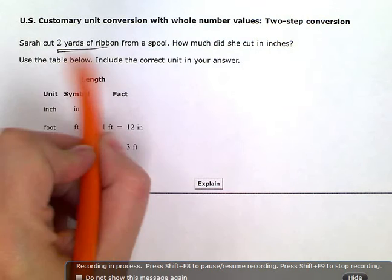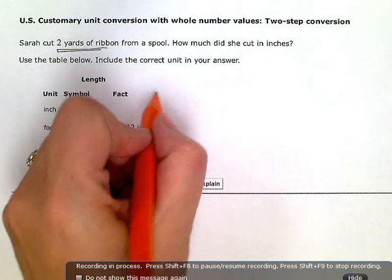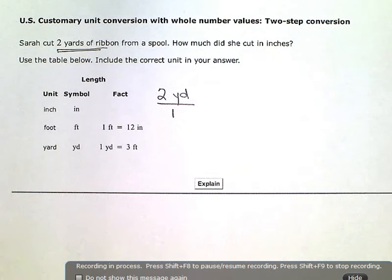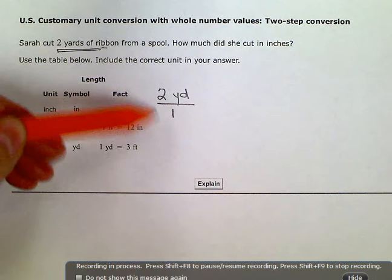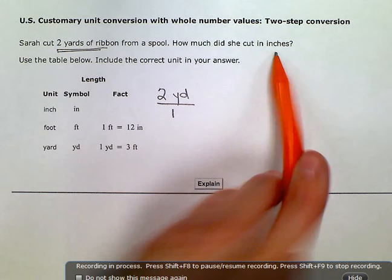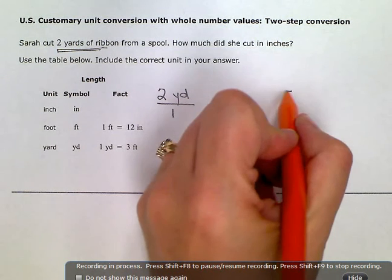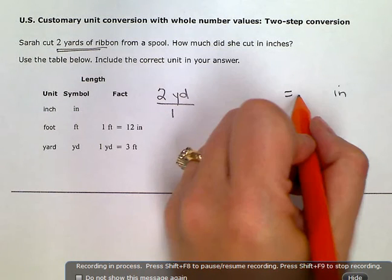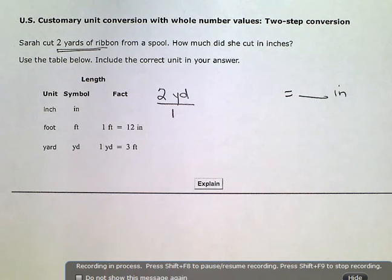So I know I'm starting with two yards. I'm going to write down that number as a ratio or put it over one. How much did she cut in inches? So I know I'm going to inches as my unit, or that's what I want my final answer to be.